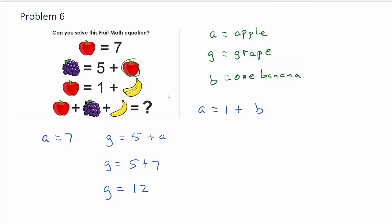And so, what we've got now is we have A, which is the apple, is equal to 1 plus, but we don't have 1 banana. We have 3 bananas, so we could do like 3 times B, okay?